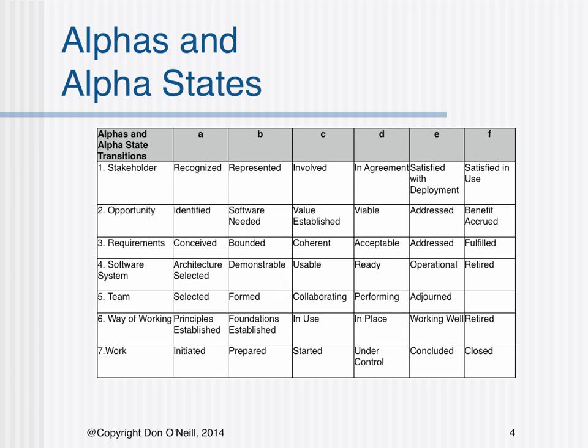More specifically, the alphas and their sequential states include: Number one, stakeholder — recognized, represented, involved, in agreement, satisfied with deployment, satisfied in use.